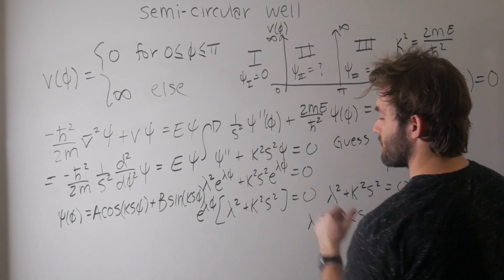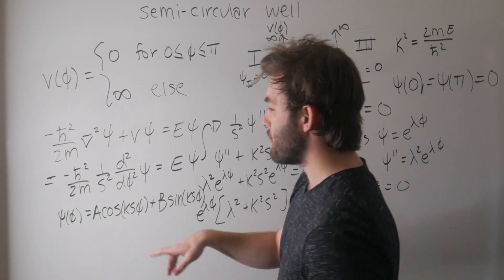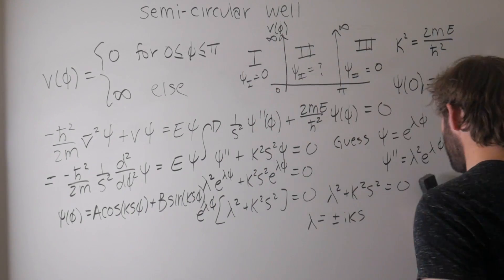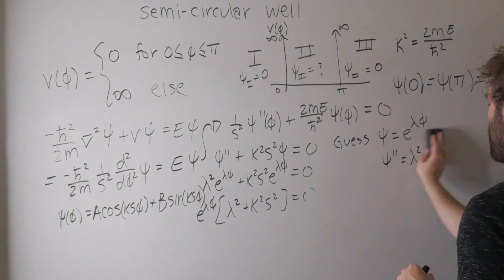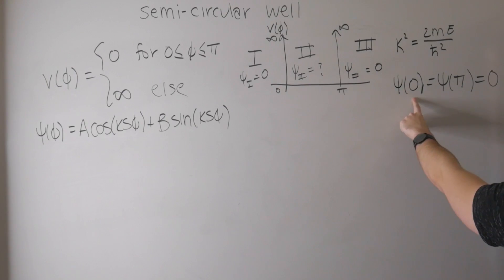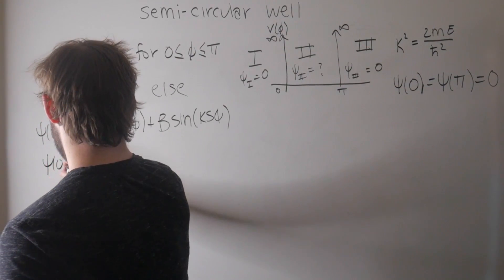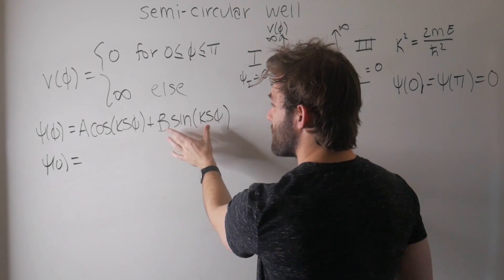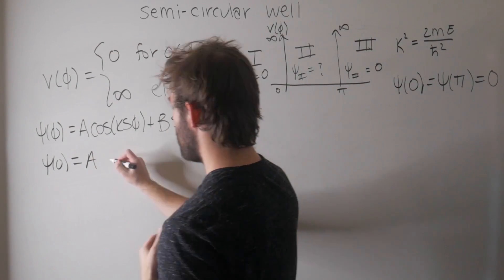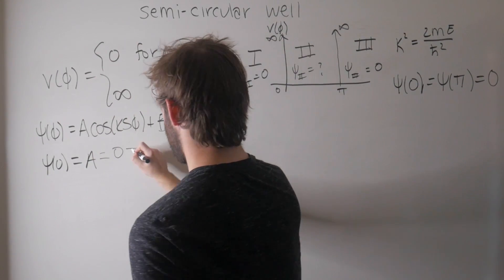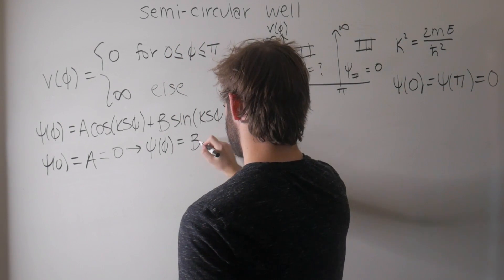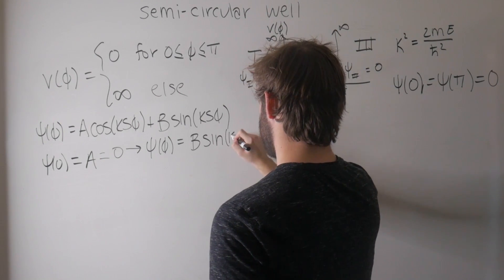Now we can uniquely determine the wave function up to a phase by imposing our boundary conditions. Our boundary conditions say that the wave function at the origin should be zero. Plugging in phi equals zero: the sine term goes to zero, but cosine of zero is one, so we get A equals zero. So now we know that psi of phi equals B times sine of ks phi.